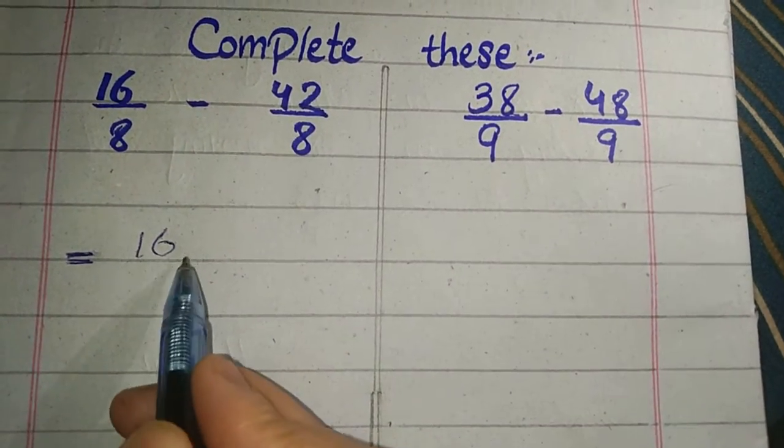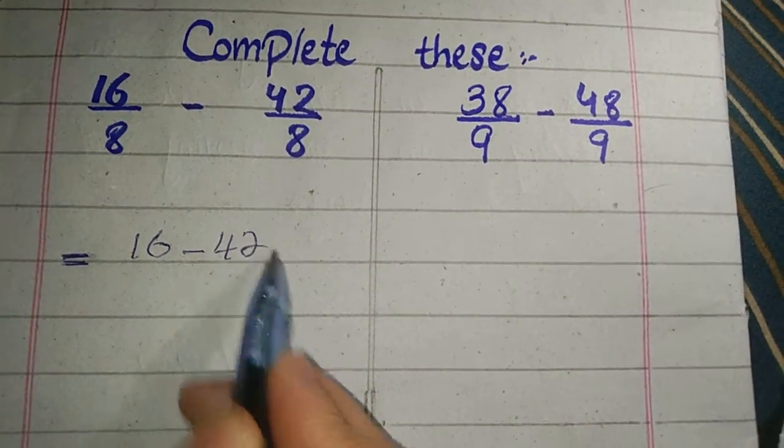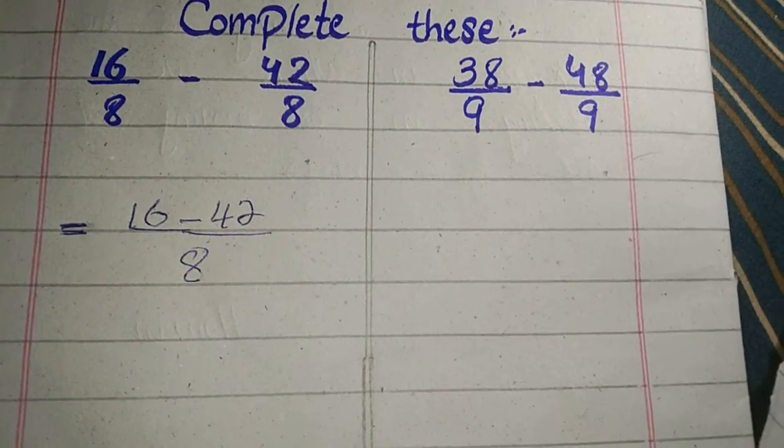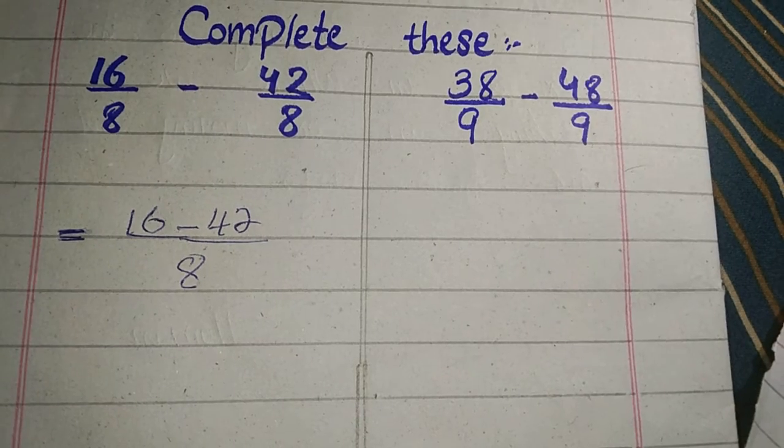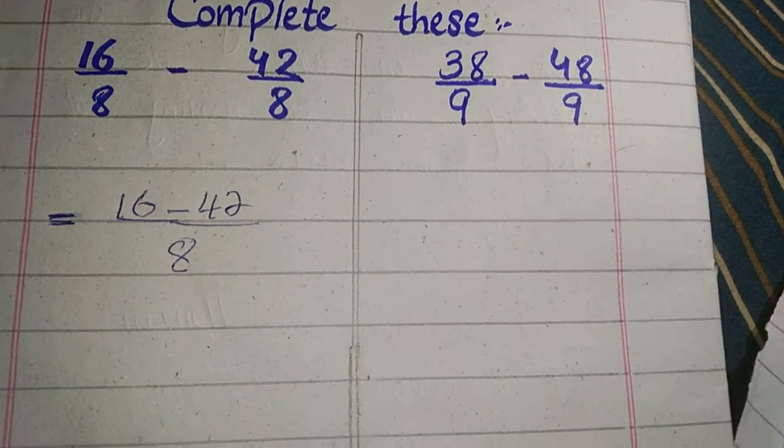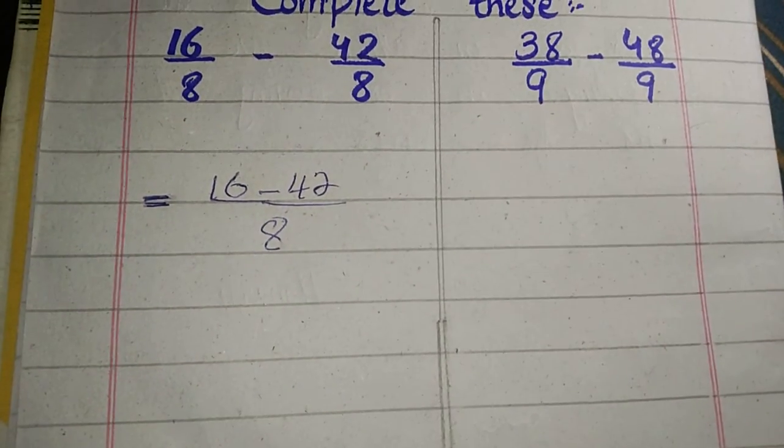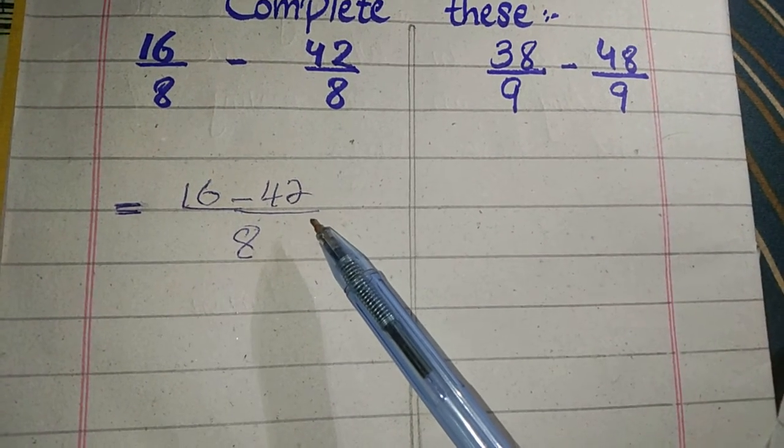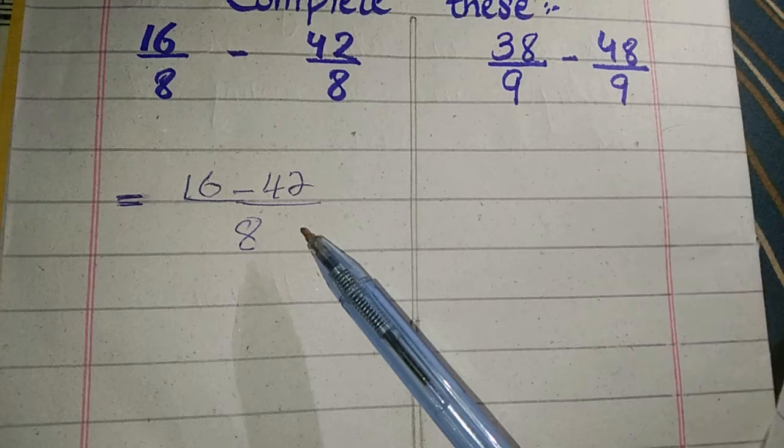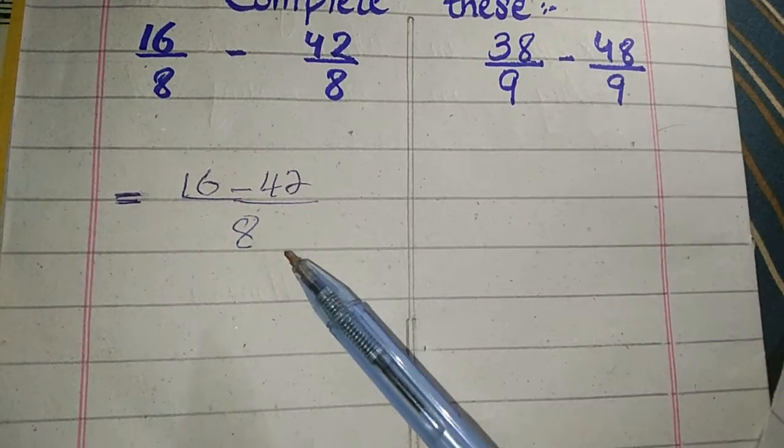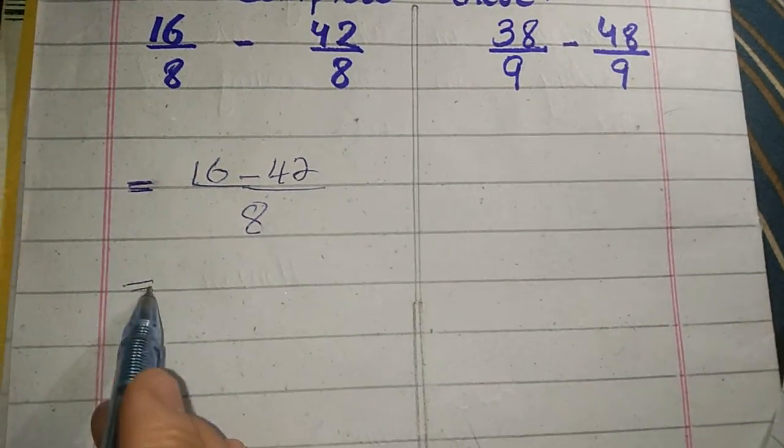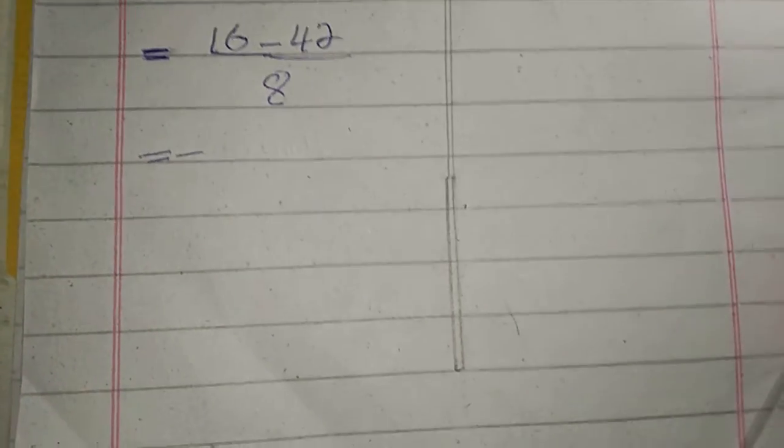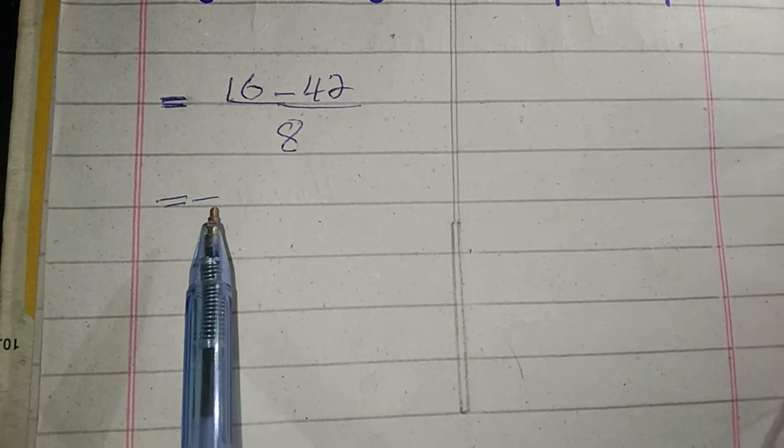16 minus 42 divided by 8. Now we have to subtract 16 minus 42. We can't subtract because 42 is greater. We will write the greater digit sign. The greater digit sign is minus, so we wrote minus here.